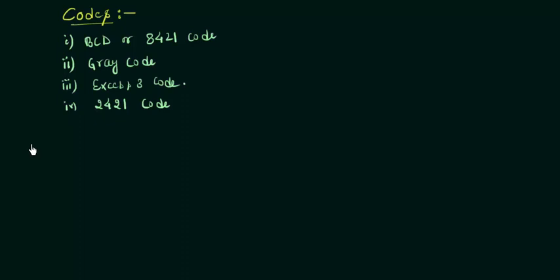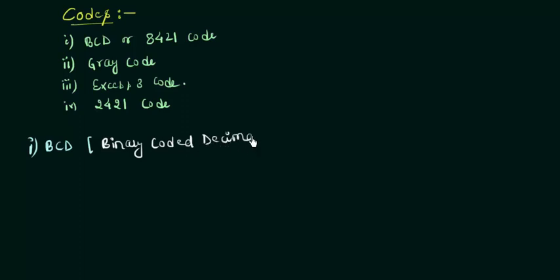The first one is the BCD code. BCD stands for Binary Coded Decimal. This BCD is an abbreviation for Binary Coded Decimal. It is also called the 8421 code — it is called 8421 because of the weights of the bit positions. We will see why it is called 8421.